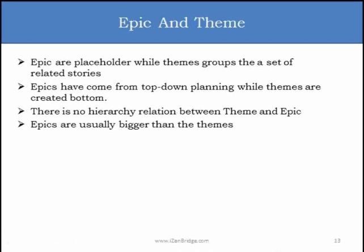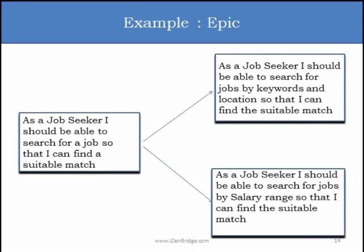Epics are a top-down manifestation of progressive elaboration — we start thinking at the top and slice user stories as we move forward. Themes are bottom-up: you have progressively elaborated small slices of stories and group them together. There is no hierarchical relationship between theme and epic. Epics are usually bigger than a theme, but the reverse can also happen — you can have a bigger theme which is a composite of multiple epics.